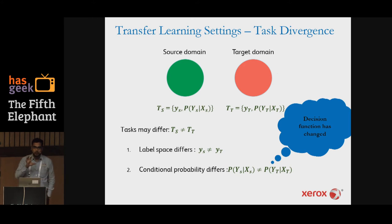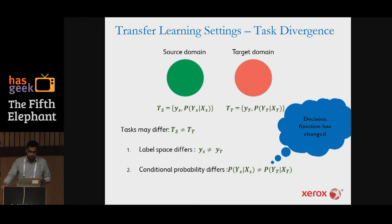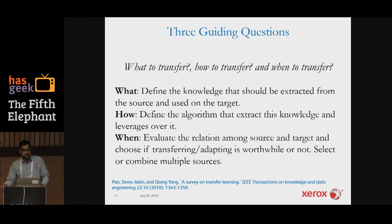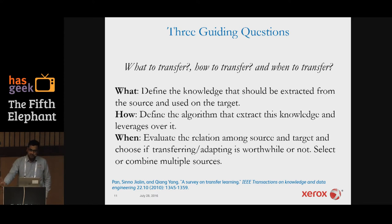The transfer learning literature covering these domain-and-task combinations has developed since 1995, when it was introduced at a NIPS workshop called 'Learning to Learn.' A nice survey by Pan and Young — published in IEEE Transactions on Knowledge and Data Engineering in 2010 — summarizes three fundamental guiding questions. First: what to transfer? Some knowledge is domain-specific and some is common between domains — identifying what's transferable is the first challenge.